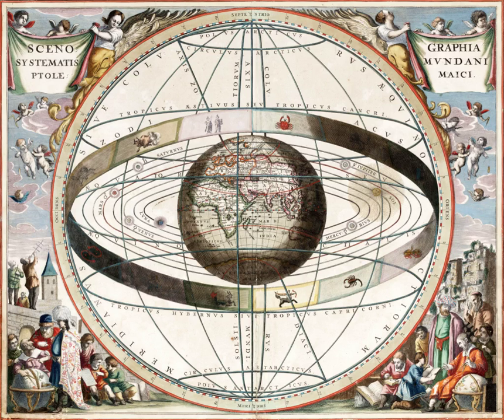Heliocentric universe, made obsolete by discovery of the structure of the Milky Way. Heliocentrism only applies to the Solar System, and only approximately, since the Sun's center is not at the Solar System's center of mass.